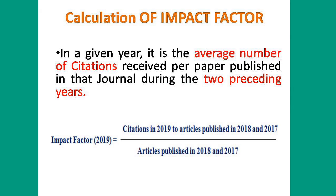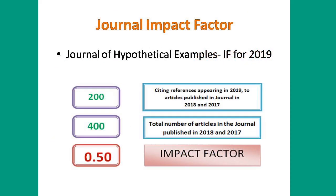So to summarize: impact factor equals citations in the calculation year (2019), for articles published in the two preceding years (2018 and 2017), divided by the total number of articles published in those two years (2018 and 2017). This is the impact factor calculation. Thank you very much for watching my video.